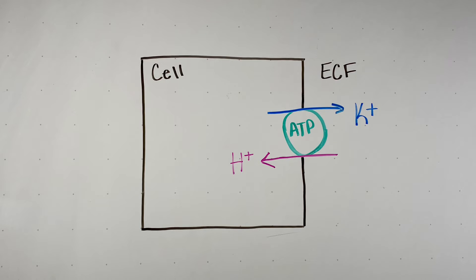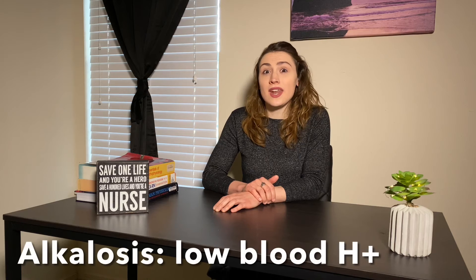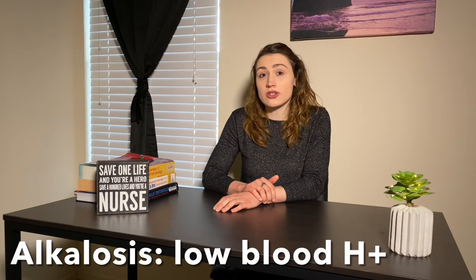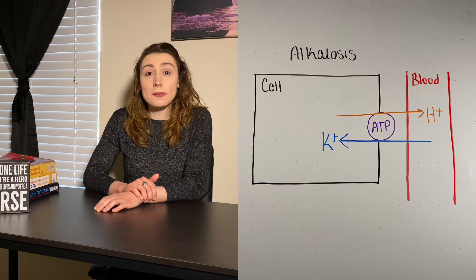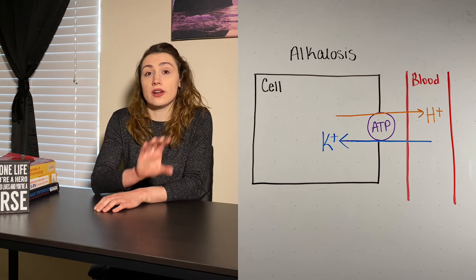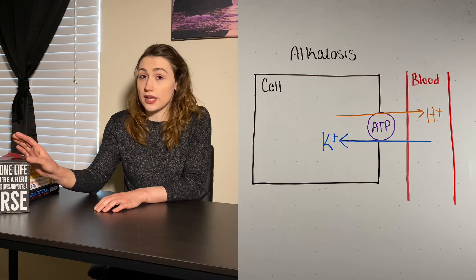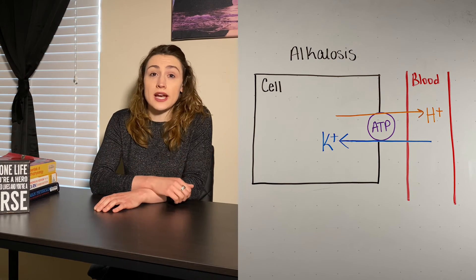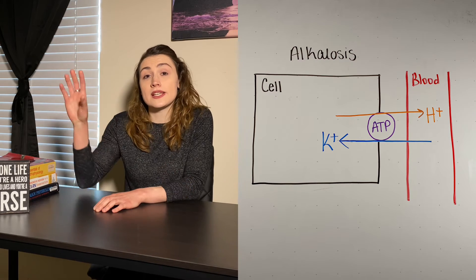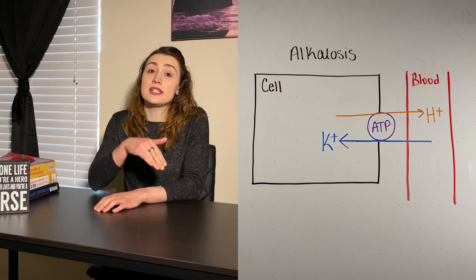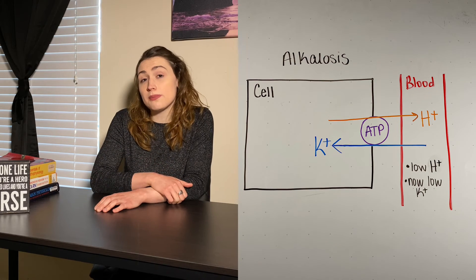The last intracellular shift involves the hydrogen-potassium pump, which plays a big role in acid-base balance. In an alkalosis, we have low blood hydrogen ion levels. To compensate, the body tries to take hydrogen ions out of the cell and shift them to the bloodstream. Because it uses the hydrogen-potassium pump to do this, it must take potassium ions out of the blood and shift them into the cell, dropping our blood potassium and causing hypokalemia. This is one reason that hypokalemia and alkalosis go together.